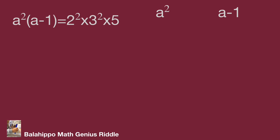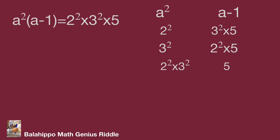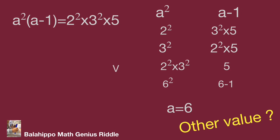Since a is an integer, there are several scenarios for this factoring to produce a perfect square. Considering 2² times 3² times 5 and grouping 2² times 3² as a perfect square, I find that 2² times 3² gives the right group. That means a² equals 6² and a minus 1 equals 6 minus 1, so a equals 6. This is one answer for a.